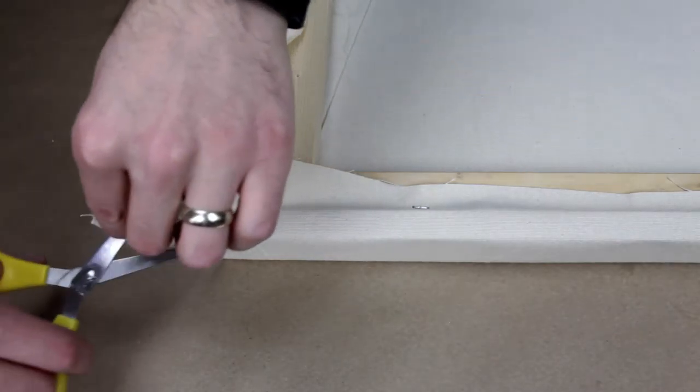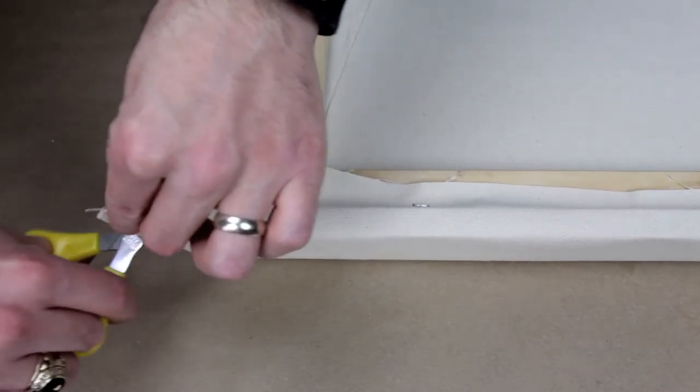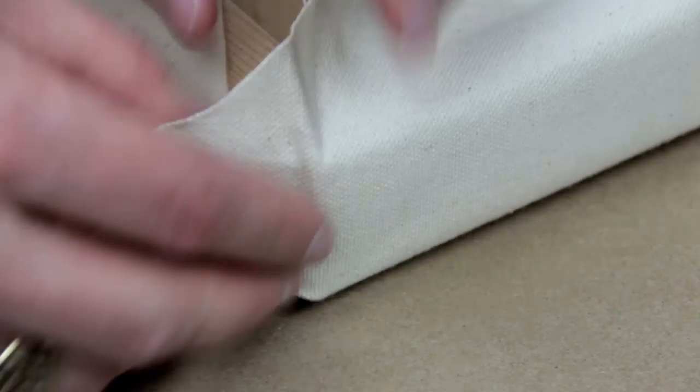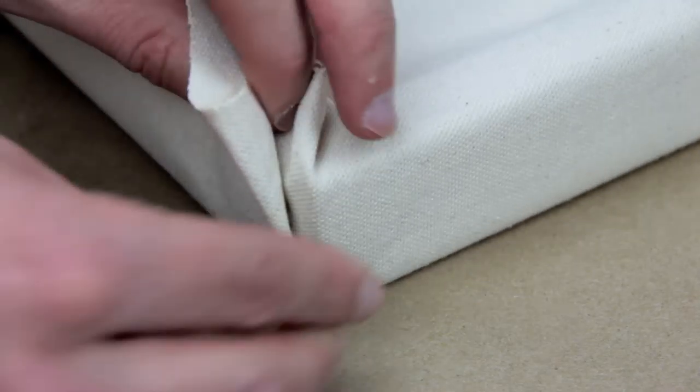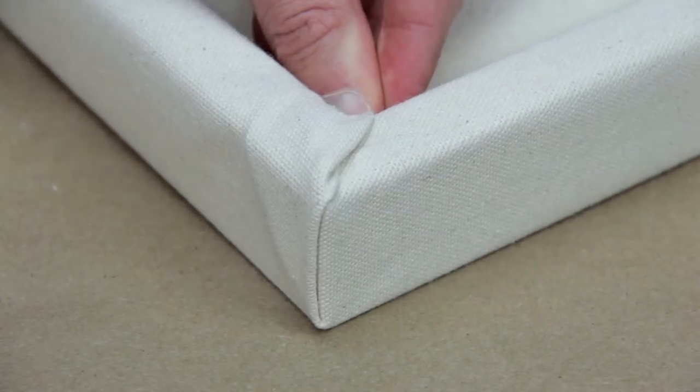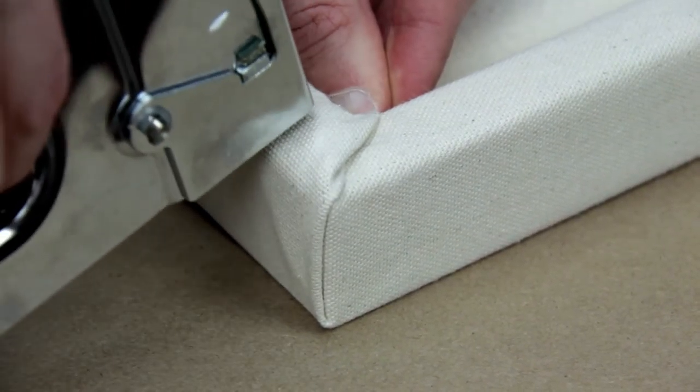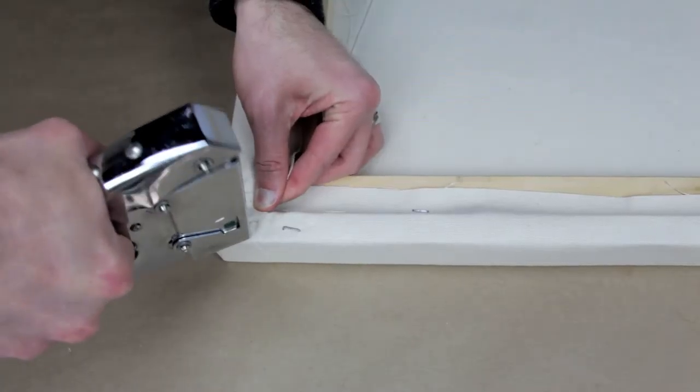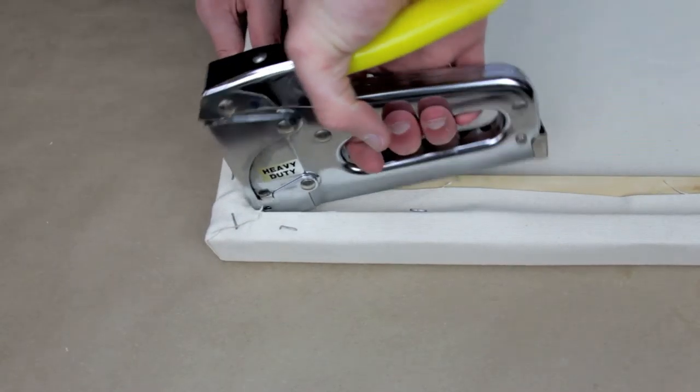You may need to cut off excess fabric on the corners. Then fold down one side against the corner and the other edge at a 45 degree angle so that the edges meet at a straight line on the corner. Fold over the excess fabric on the top and staple everything into place, making sure to keep the canvas tight.